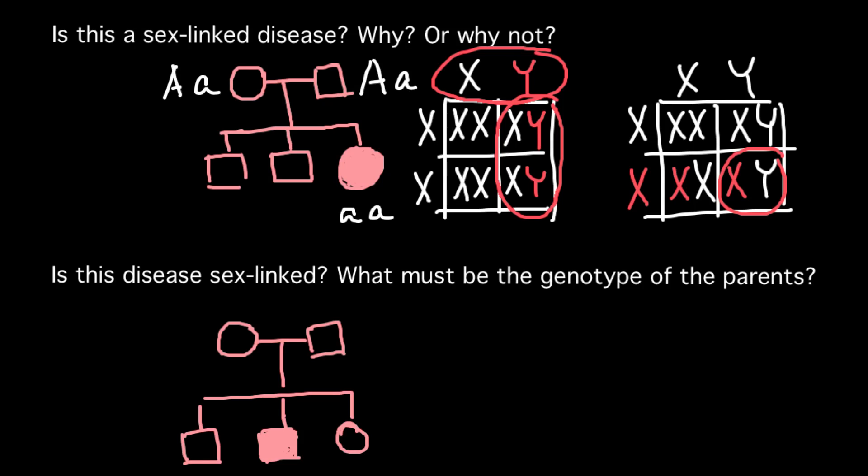Next question: is this disease sex-linked? What must be the genotype of the parents? Once again, we can use these two reference pictures. If it's going to be a Y chromosome-linked genetic disorder, we would see an affected father and son, but this is not the case here. And if this is going to be an X chromosome-linked genetic disorder, we would see a phenotypically normal mother, none of the females would be affected, and 50% of the males would be affected. So this is a possibility.